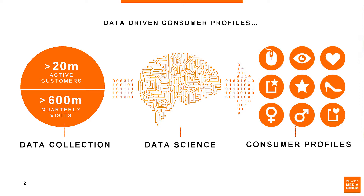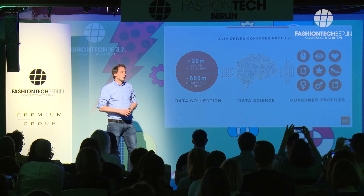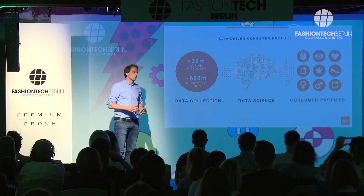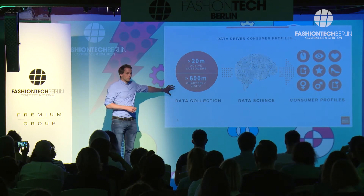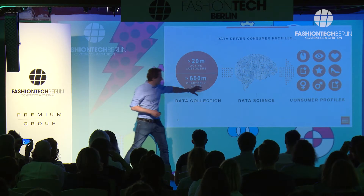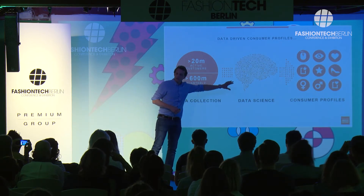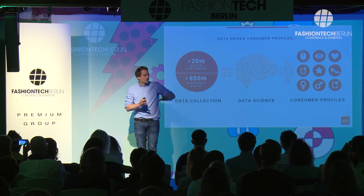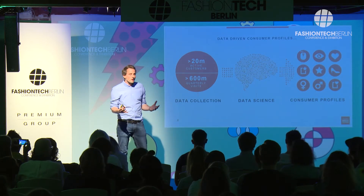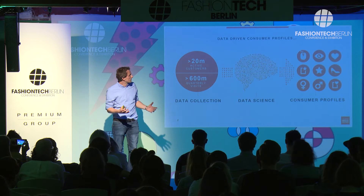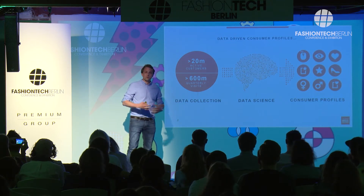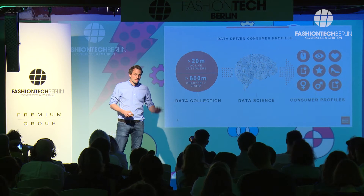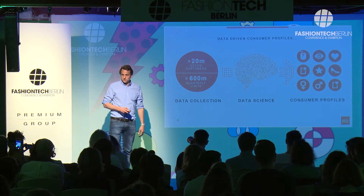So what do we do with those 600 million visits which we have every quarter, and 20 million active customers buying goods? Basically, we collect the data. Then we have some data scientists running it through a data science brain — basically aggregating the data and coming up with deep consumer profiles so that we can describe who is behind those orange and blue dots which you just have seen.